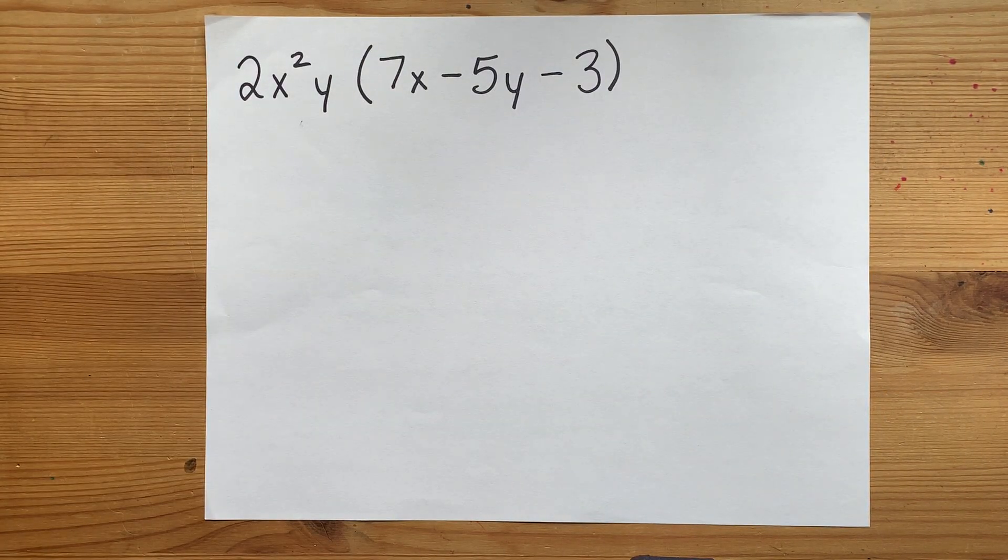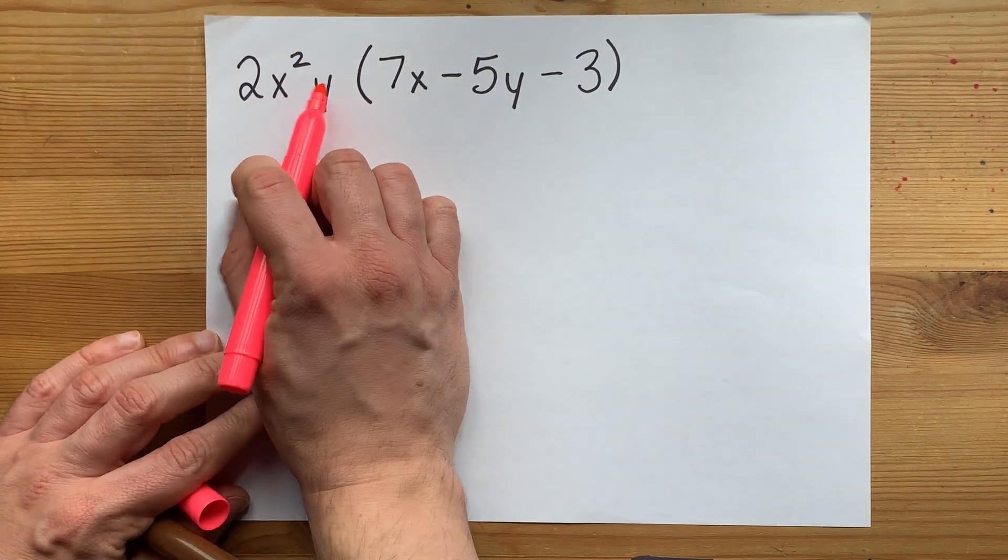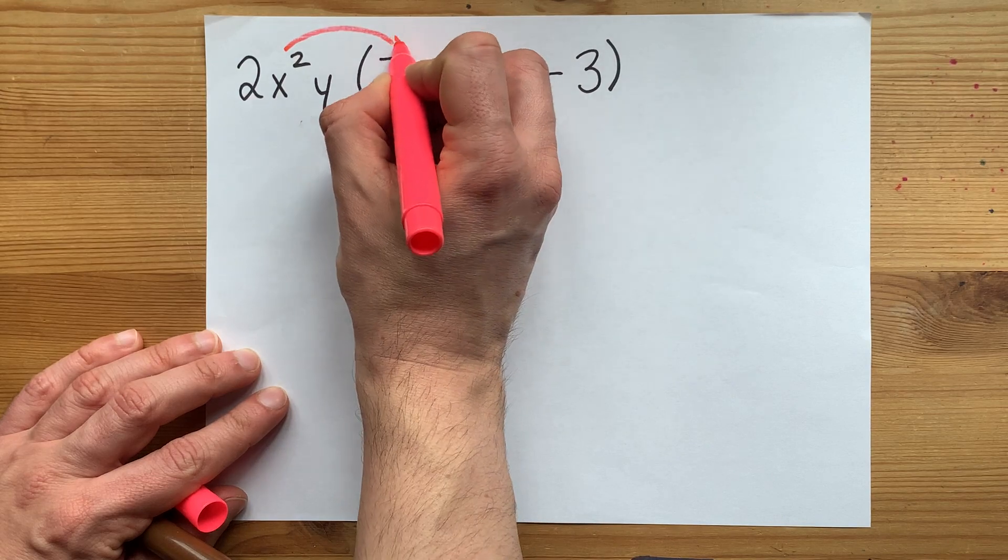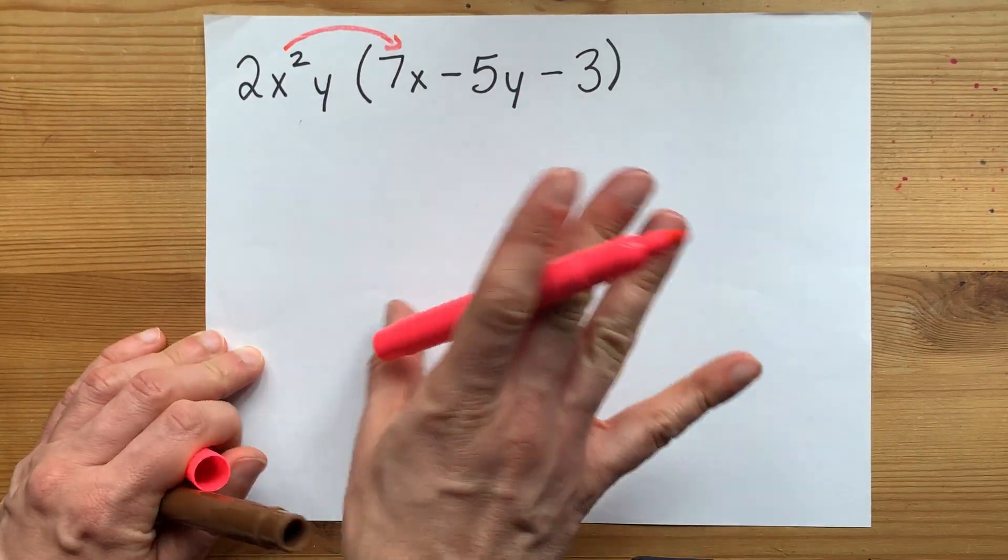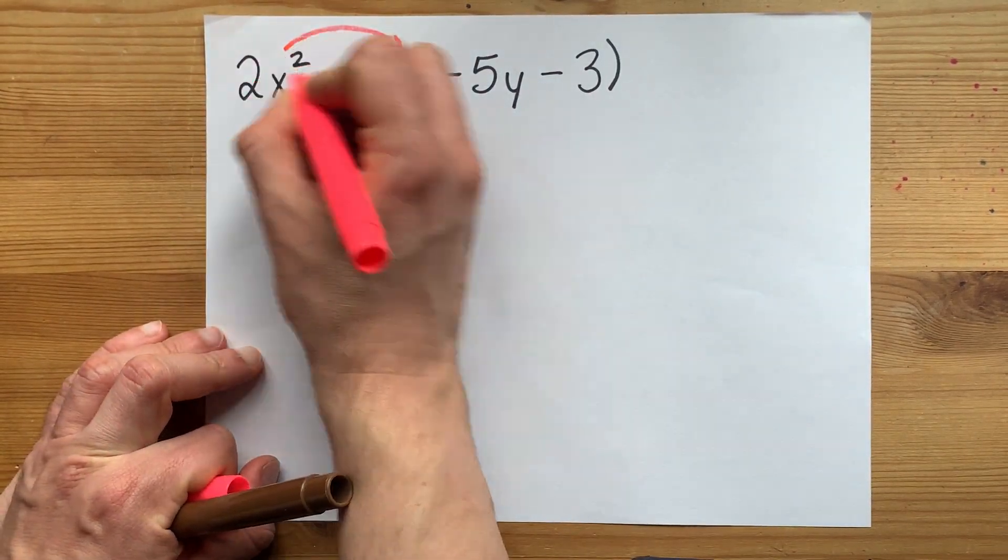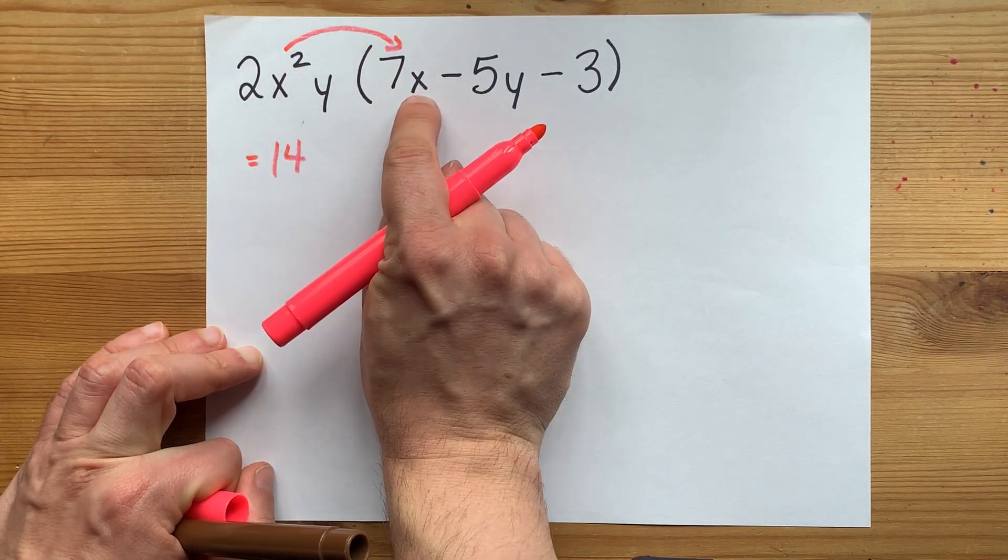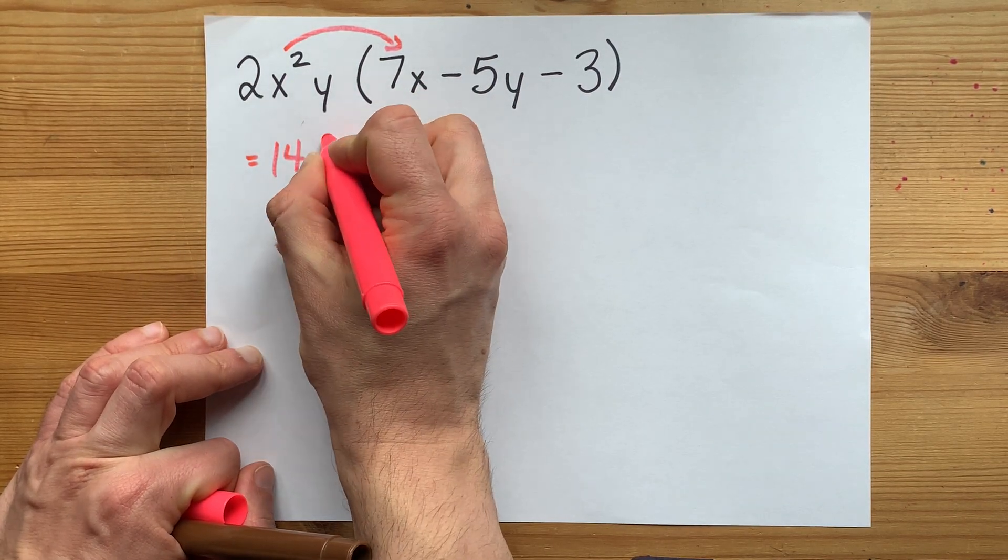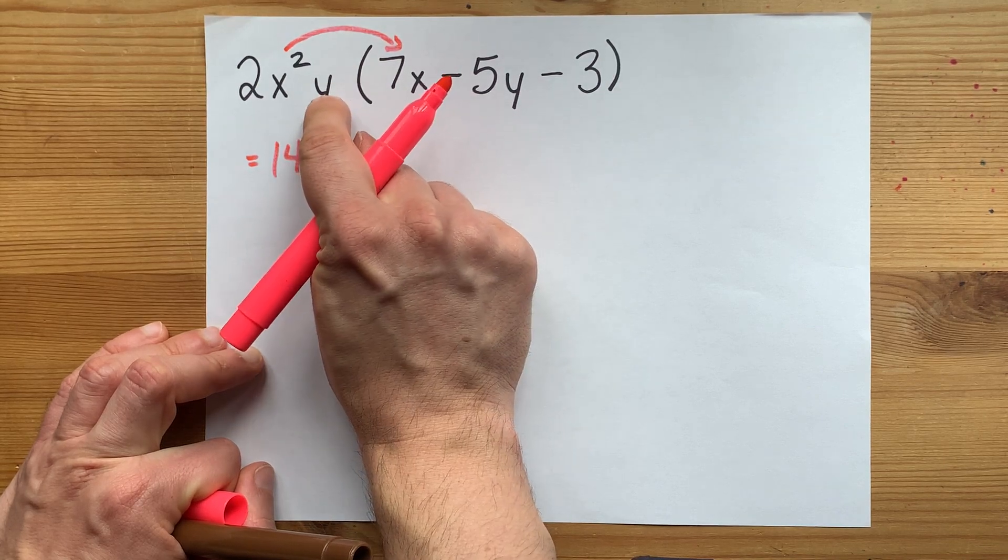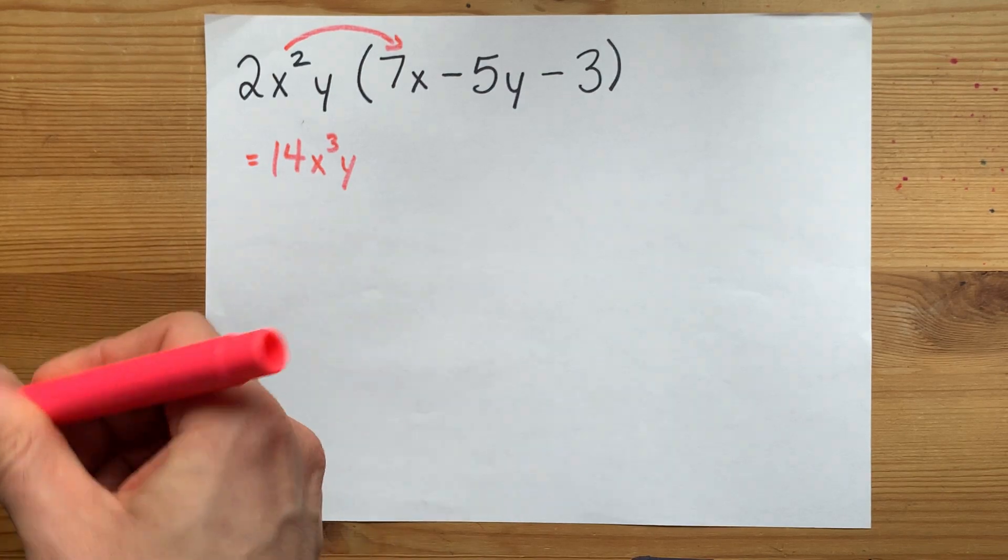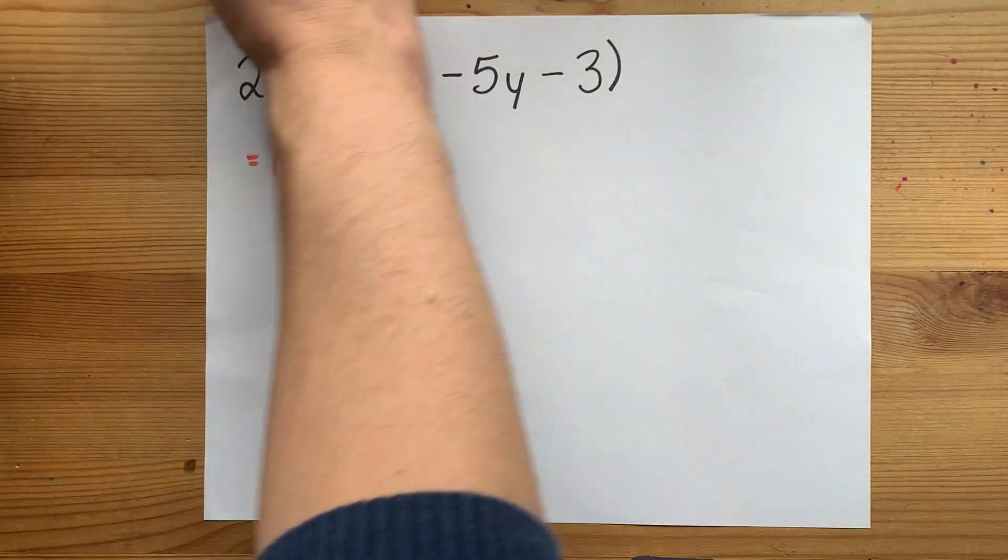Now, 2x squared y. We're going to take that whole thing and multiply it by another 7x. Now, we can do these one at a time if you'd like. 2 times 7 is 14. x squared with an extra x is x to the 3. And we have a y here. Now, what we're about to do is the same thing again, but 2x squared y get multiplied by minus 5y.